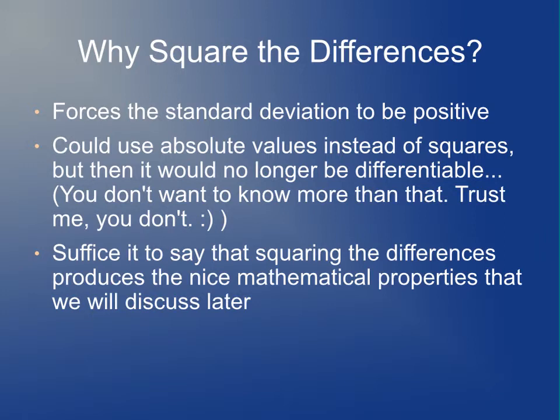Why do we square the differences? Well, if you just took the raw difference between each observation and the mean, it's easy to show mathematically that if you take the sum of that, it's always equal to zero. So that's not going to work. But why do we use squares rather than absolute values? The short answer is that if you use absolute values, then you have a function that's not differentiable and you run into all kinds of mathematical problems downstream. You really don't want to know the details, I promise. But for the time being, suffice to say that if you square the differences, it'll produce these nice mathematical properties that I'll describe later.